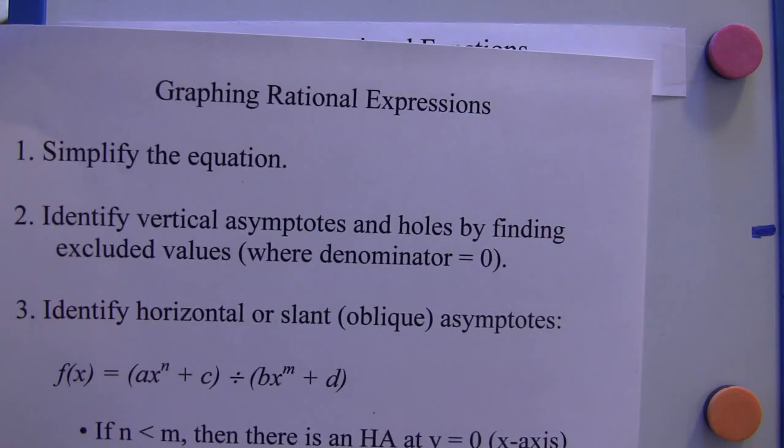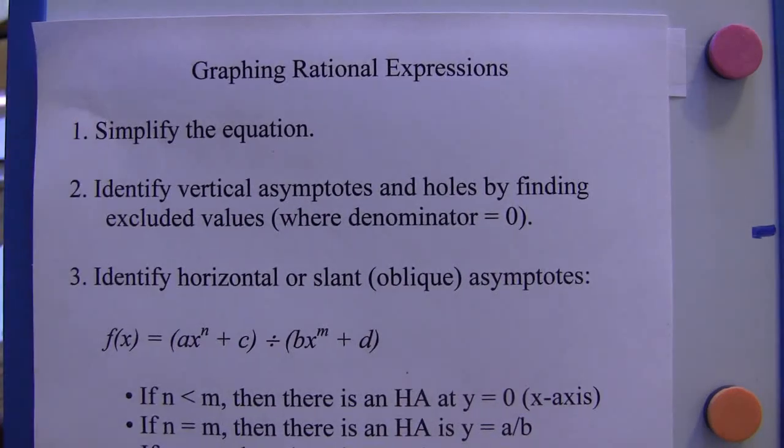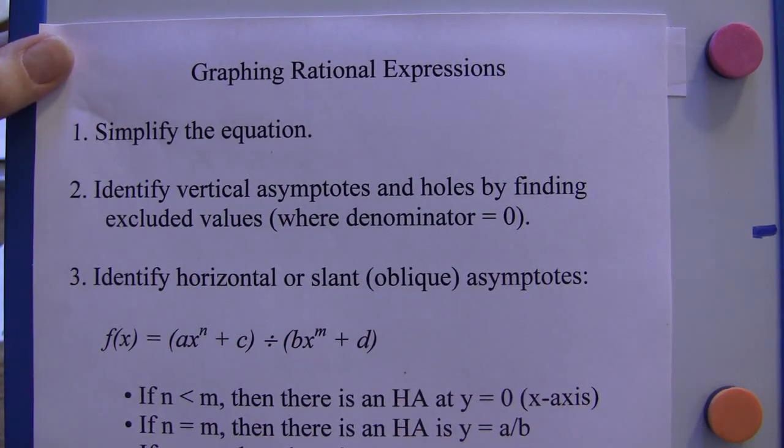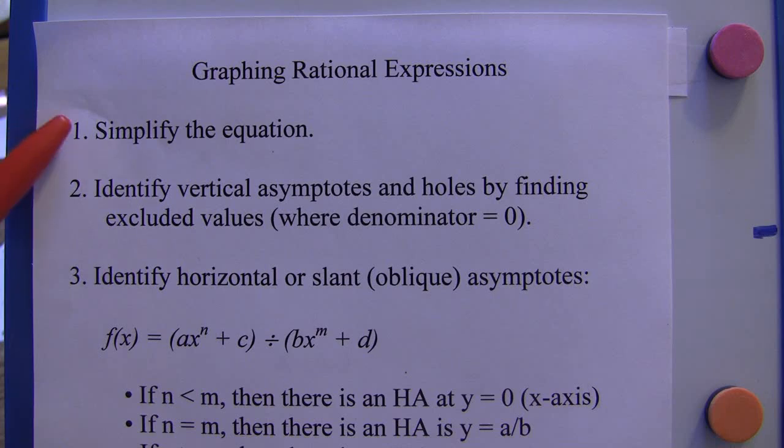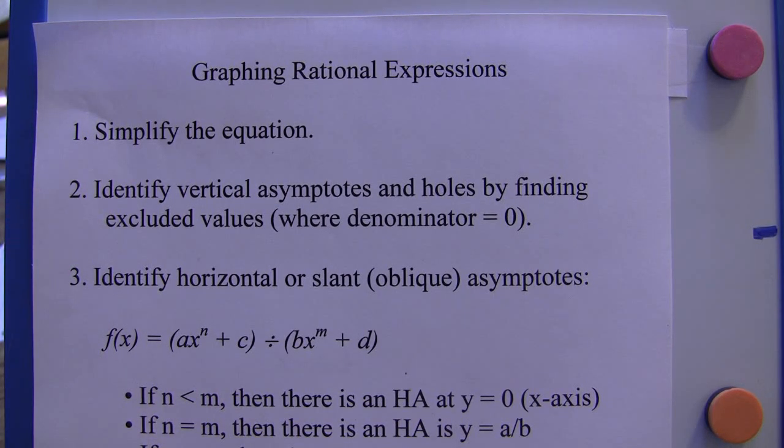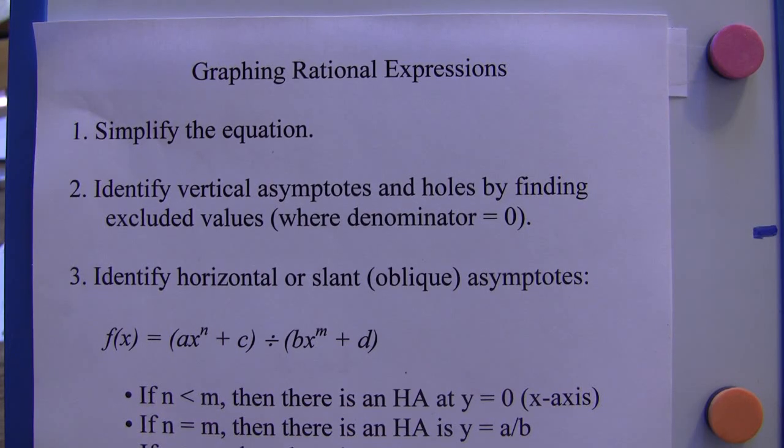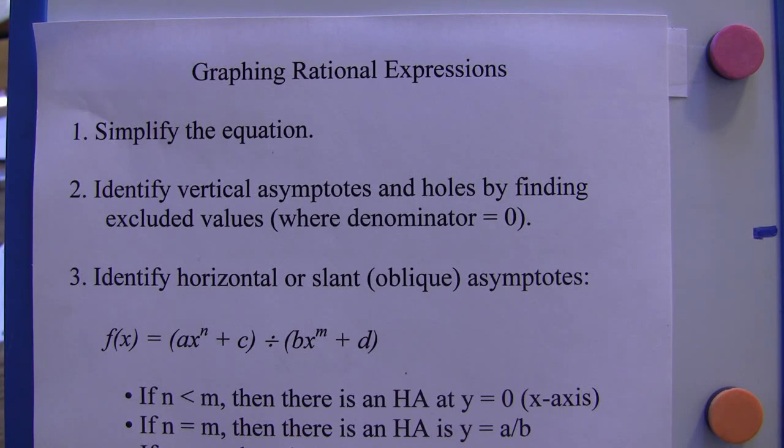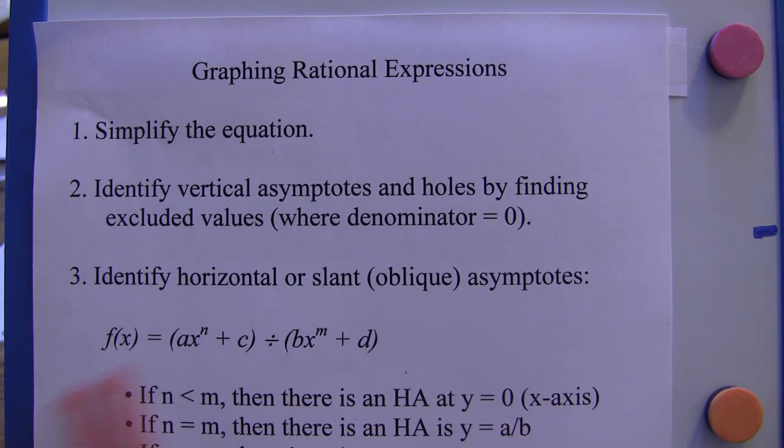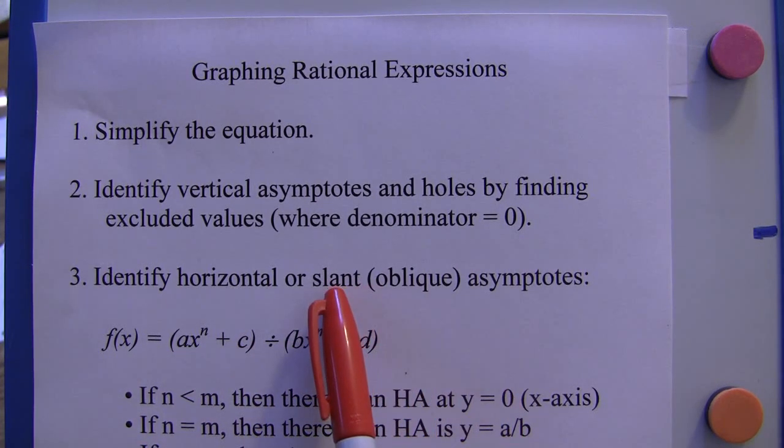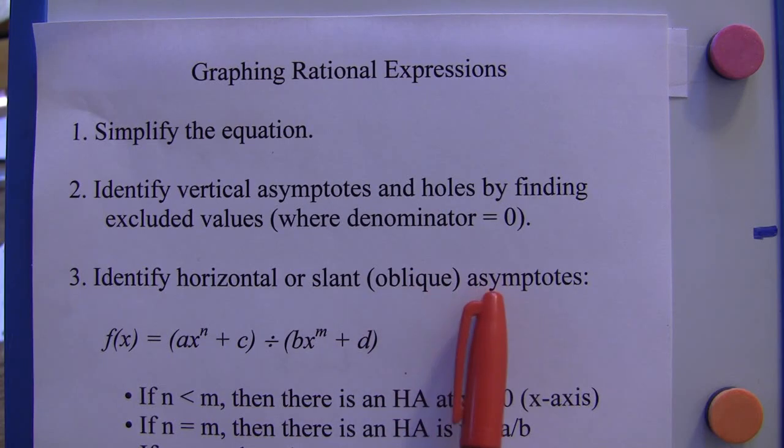In the first one, I went over four things you need to do when you graph rational expressions. The first is to simplify the equation. The second is to identify vertical asymptotes and holes by finding excluded values. The third is to identify horizontal asymptotes or slant asymptotes or oblique asymptotes. A slant asymptote and an oblique asymptote are the same thing.